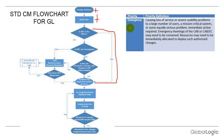On priority definition: emergency is defined as causing loss of services or severe usability problems to a large number of users, a mission-critical system, or a similarly serious problem requiring immediate action. Emergency meetings of the CAB or emergency committee may need to be convened, and resources may need to be immediately allocated to deploy authorized changes. We will be focusing majorly on emergency changes and maintenance changes during the first phase of the change management process.